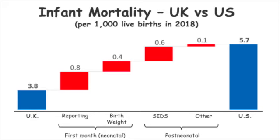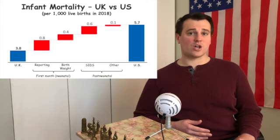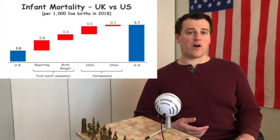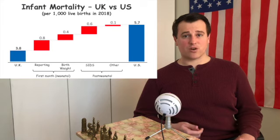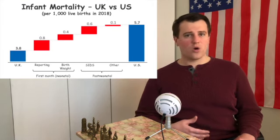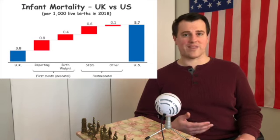Birth weight explains 0.4 of the remaining gap, meaning we have a higher share of babies born prematurely or to mothers who use tobacco, alcohol, or drugs. The final major piece is sudden infant death syndrome (SIDS) in babies older than one month. Almost the whole gap — except for reporting — goes away if you control for socioeconomic differences. It's mainly about how a mother treats her body while pregnant and how the baby is cared for. Whether you consider that a failing of the healthcare system or of community and family structure is your call, but that's the full story.